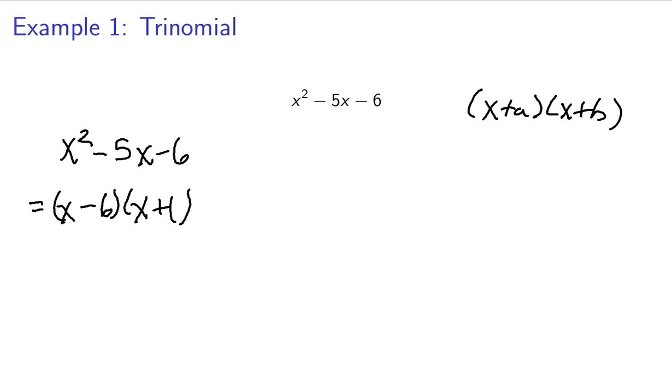And negative 6 plus 1 will give us negative 5. And you can multiply that out to check your solution, but this will be the final factored form of x squared minus 5x minus 6.